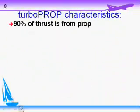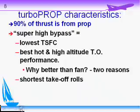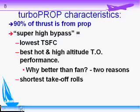Turboprop characteristics: just like a turbofan, about 90% of thrust comes from the propeller and 10% from the core. Outside of this class, you'll rarely hear about propellers having a bypass ratio, but the theory is identical: if a large mass of air is accelerated by the propeller with only a small change in velocity, fuel economy is better than accelerating a small mass to a much higher velocity.